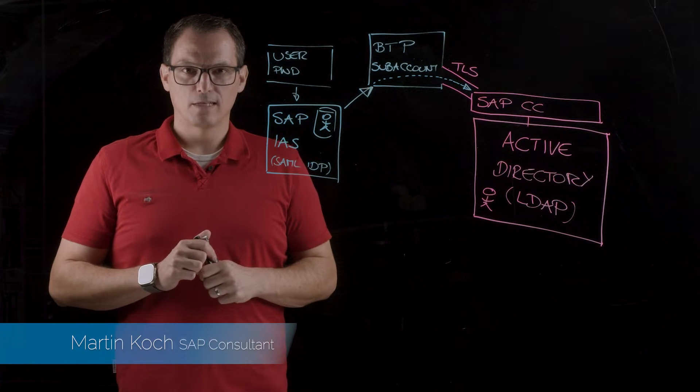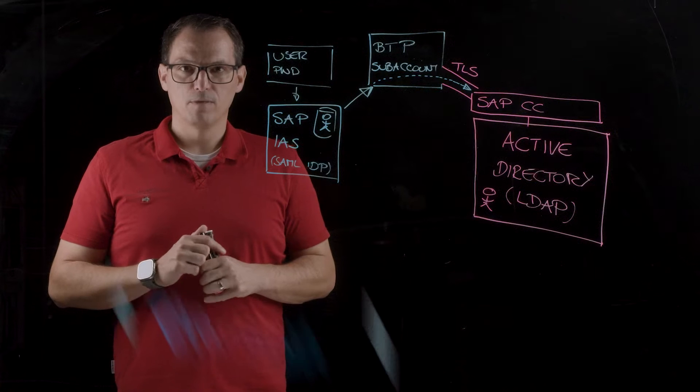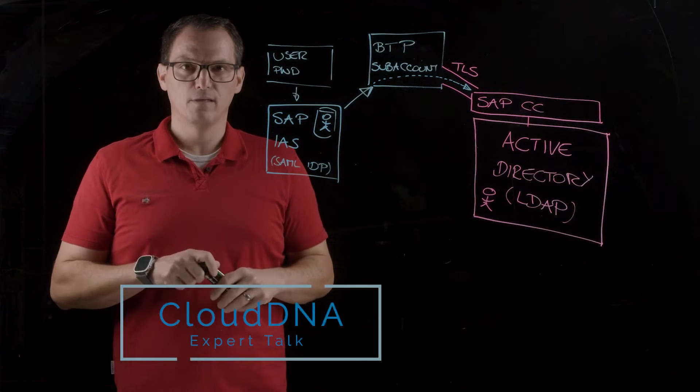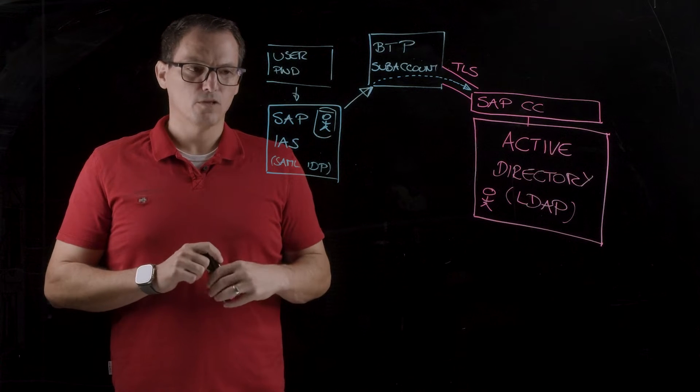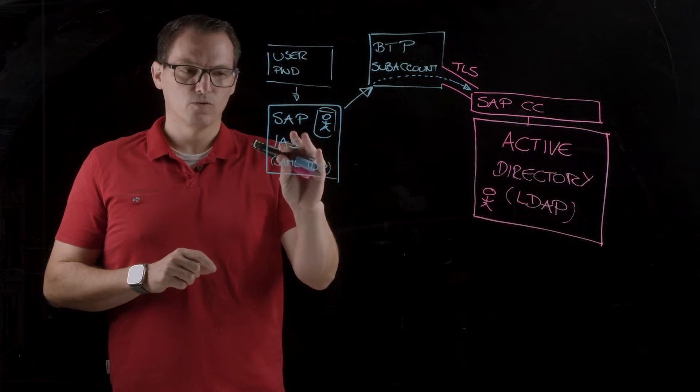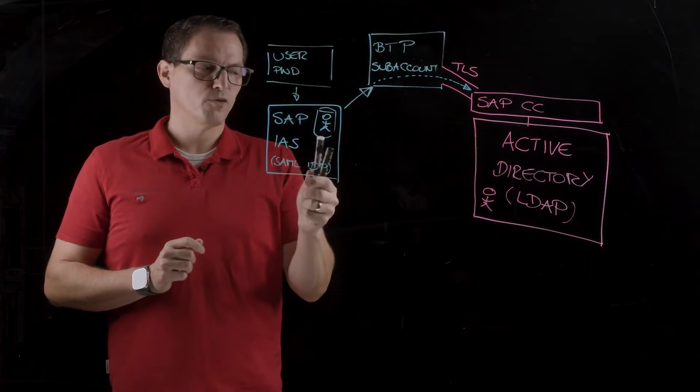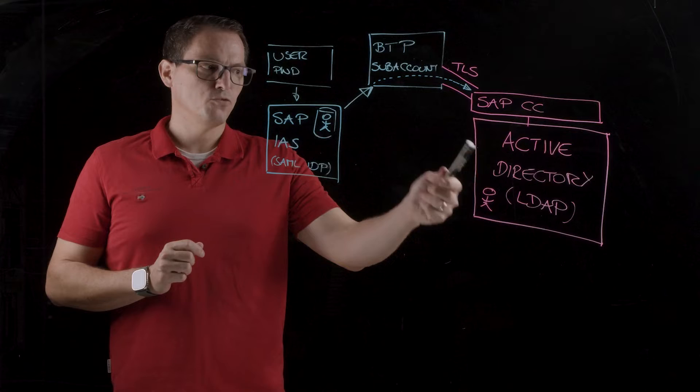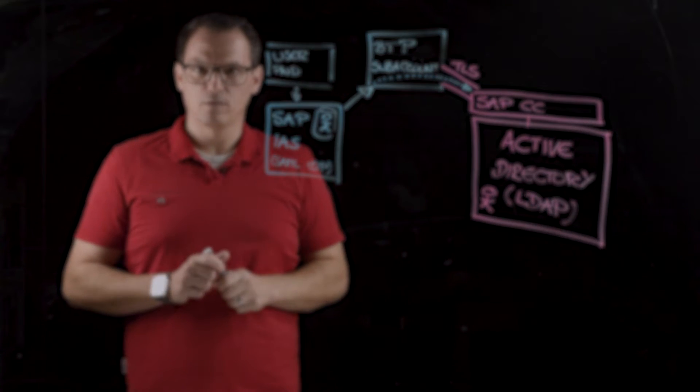Hello and welcome to the next expert talk from Cloud DNA, again working with SAP Business Technology Platform Security, or in the security area. In this expert talk we are going to show you how the SAP Identity Authentication Service can be used as a proxy to authenticate users against an on-premise Active Directory, a so-called corporate identity provider.